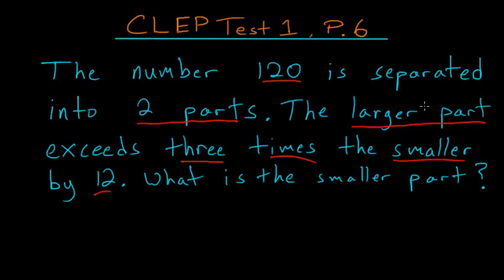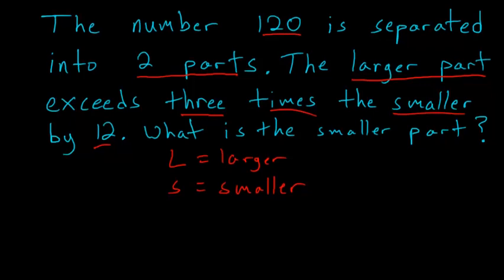We'll take this a little bit at a time. If we're splitting the number 120 into two parts, we'll need two variables. We'll say that L is for the larger part and S is for the smaller. Right away, we know one of the equations we need. The number 120 is separated into these two parts, so L and S combined make 120, or L plus S equals 120.